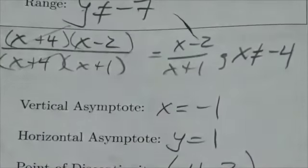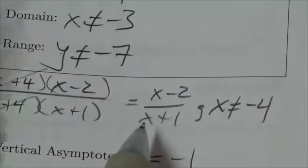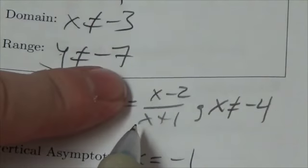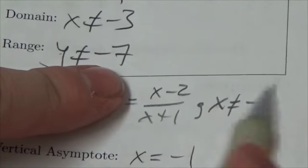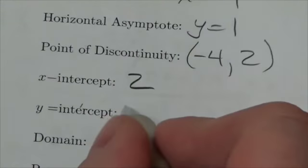And I come back and get rid of that 0. Going back up to here, if I want to figure out what the y-intercept is, I'm going to make the x-coordinate equal to 0. And I get negative 2 divided by 1, which means my y-intercept is negative 2.